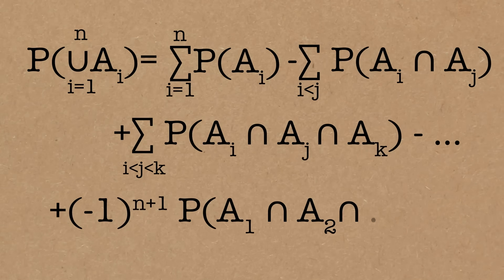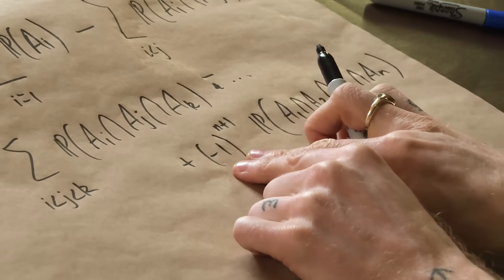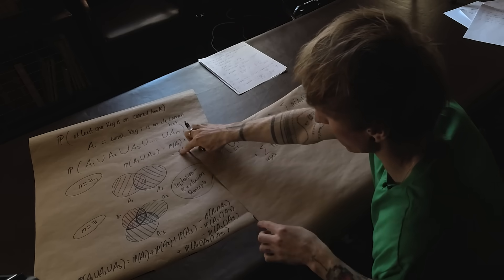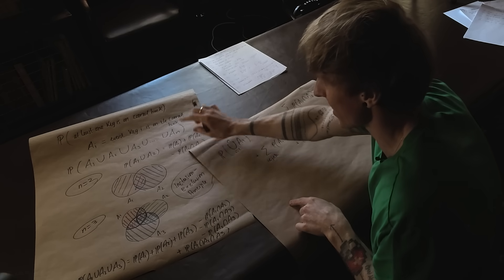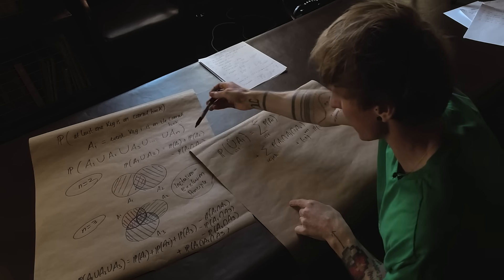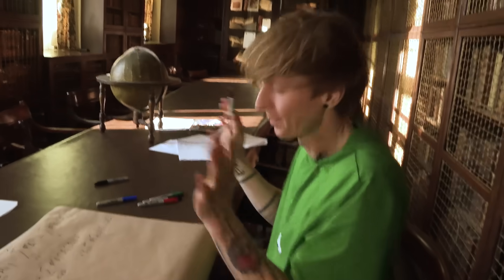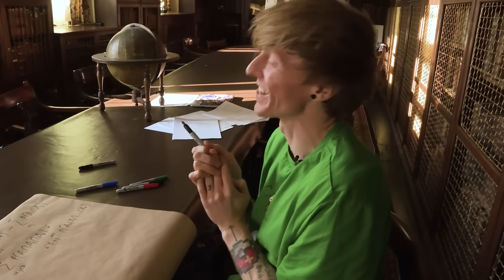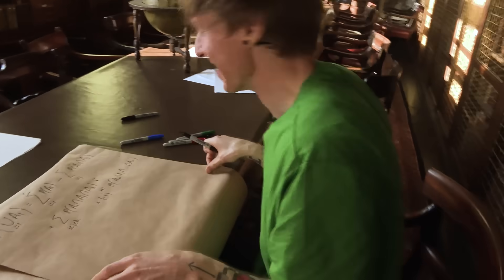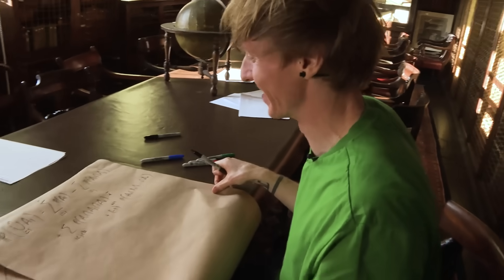We of course don't want to double count 1 and 2, because that's the same as 2 and 1. The order isn't important. So what we do is we say this is the sum over i smaller than j, where they both go from 1 to n. We just put that condition there to make sure that we're not double counting. Then we add back in the next one. And now we've got i less than j less than k. And the sign is going to keep swapping. It's actually going to be minus 1 to the n plus 1.